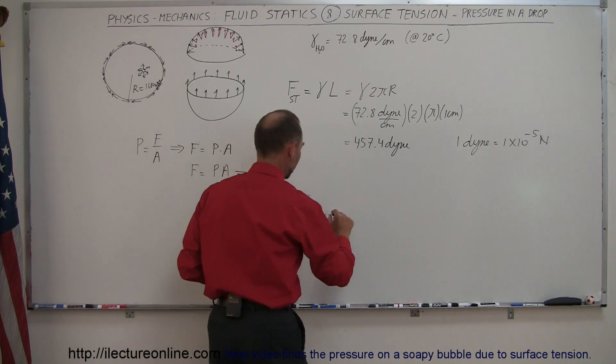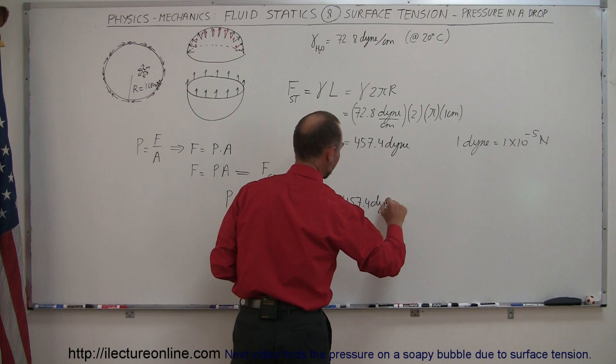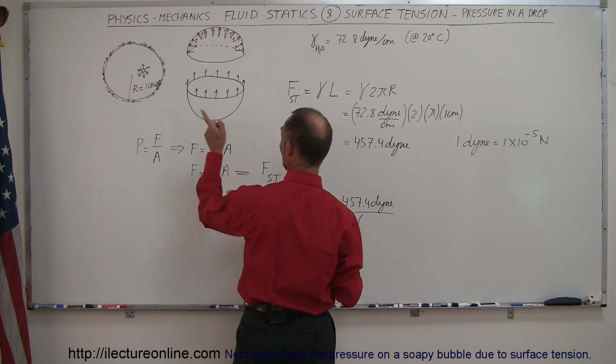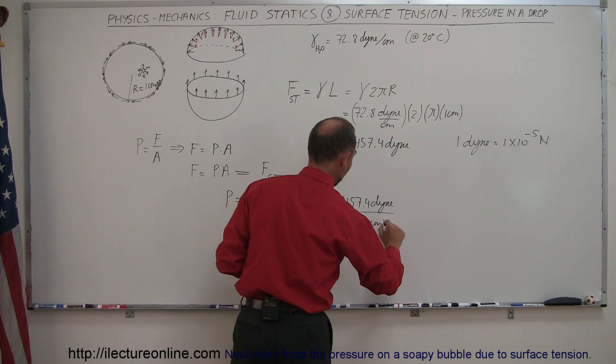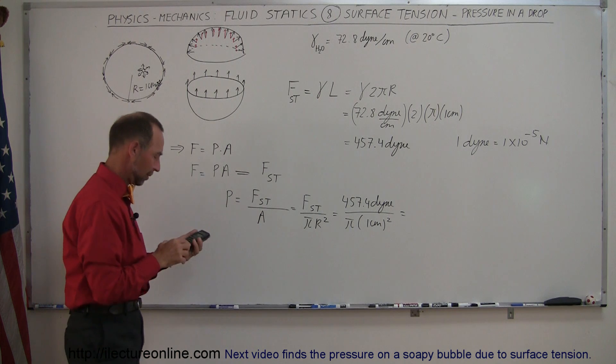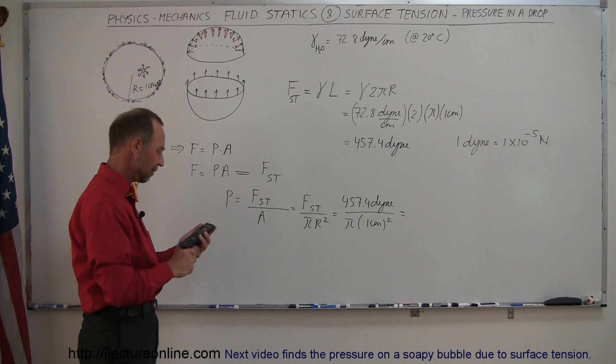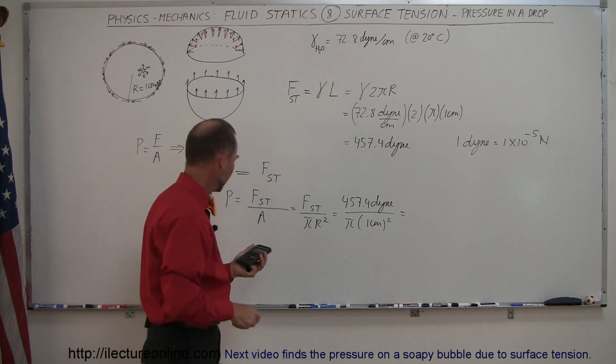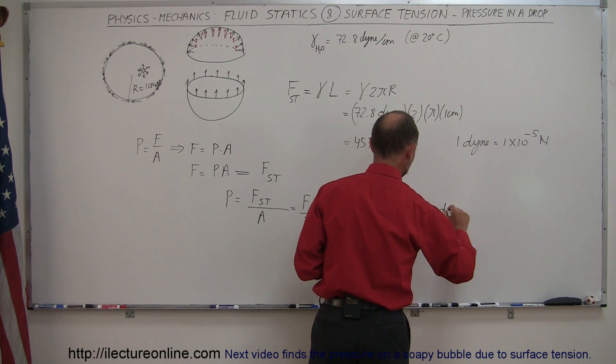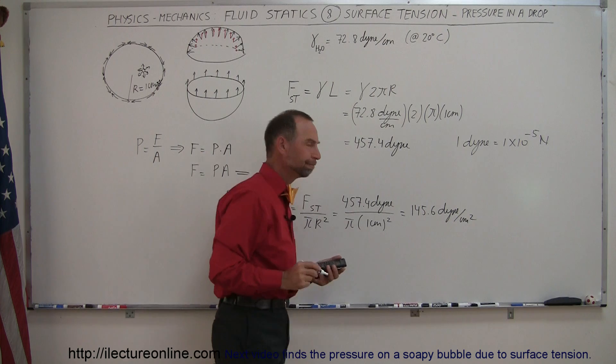Of course, that's the force of the surface tension divided by πr². Then all we have to do is plug in the numbers. So we get 457.4 dynes of force divided by π times the radius. The radius is one centimeter, and we have to square that, and that would then be the increased pressure inside the drop. So divide by π equals, and we get 145.6 dynes per square centimeter.